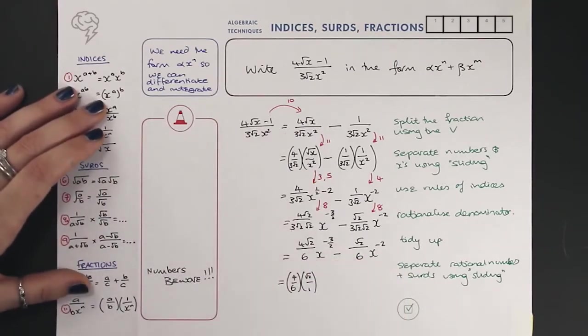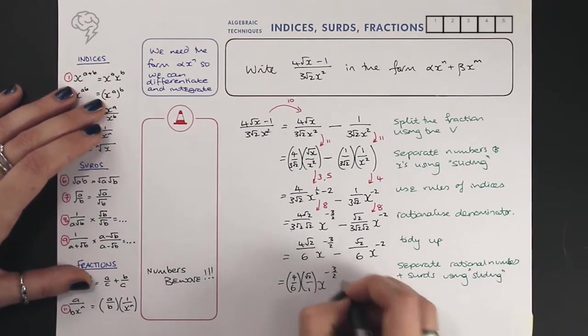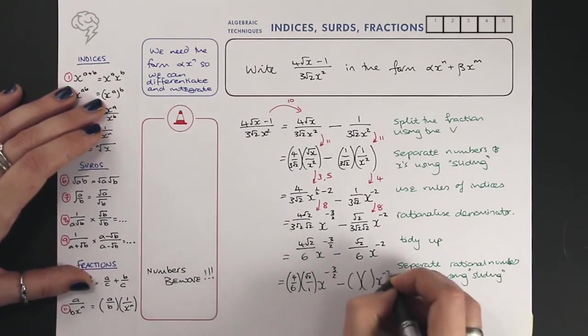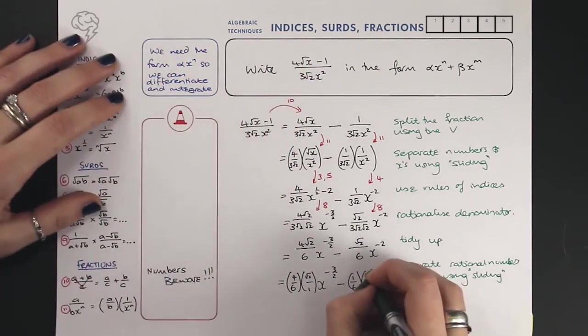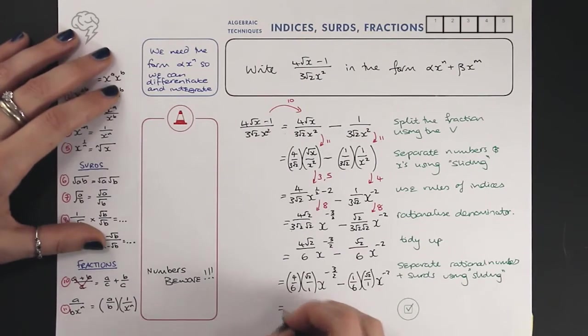Put a one in if necessary. Four root two on the top, six times one is six. Slide those numbers to the left, slide the surds to the right. And now we can write our final answer.